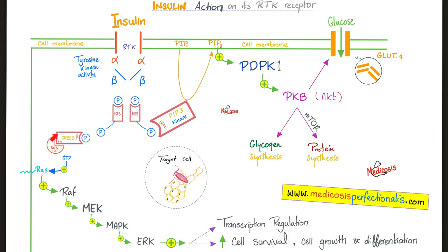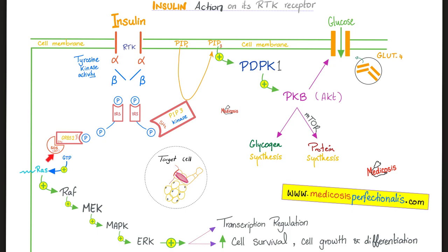What does GRB2 stand for? Growth factor receptor-bound protein 2 — because it causes growth. What does SOS stand for? Son of Sevenless. Sevenless is a gene that encodes receptor tyrosine kinase. SOS is also known as GEF — guanine nucleotide exchange factor — and that's why the next step is GTP, which activates RAS.